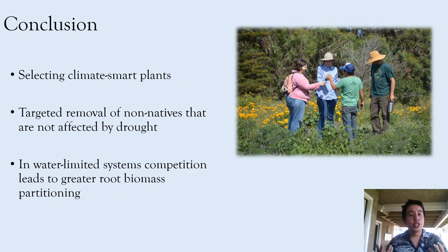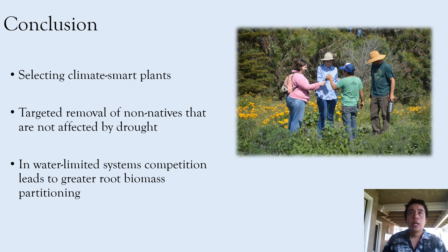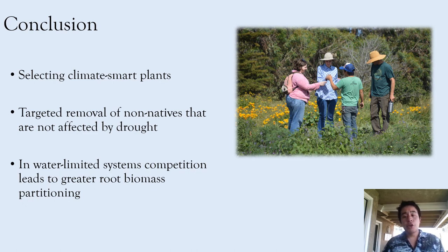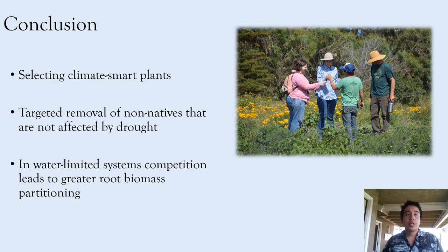So what does this mean for management and future studies? First, we can think about selecting climate-smart plants — selecting plants during dry years that are less affected by drought and can recover more quickly from drought in terms of photosynthesis, and may better withstand competition from invasives. Some examples from our study are Bromus carinatus, Stipa pulchra, and Sidalcea malviflora. We can also think about introducing more sensitive species like Lupinus nanus and Diplacus aurantiacus, and potentially other annual forbs, during wetter years when they are more likely to establish, reproduce, and add seed to the seed bank for future years.